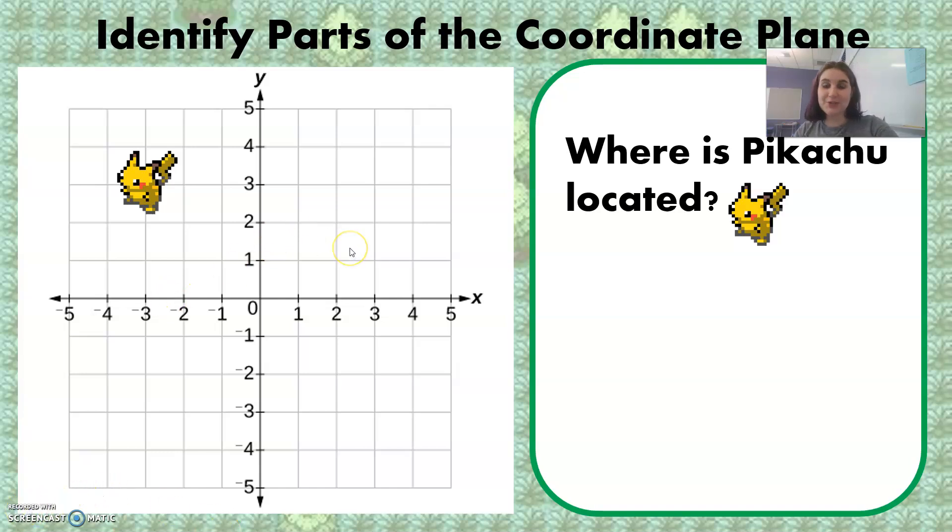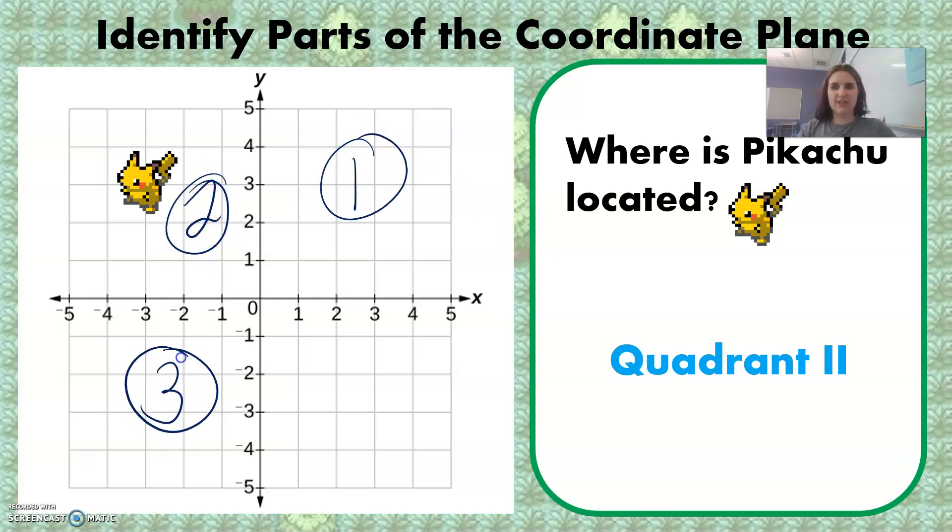So Pikachu is located in quadrant two, quadrant two. So this would be quadrant one, quadrant two, quadrant three, and quadrant four.